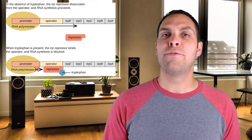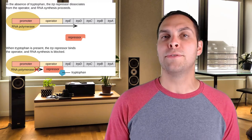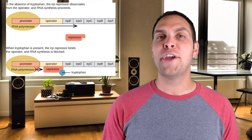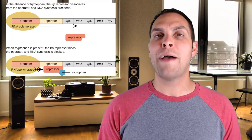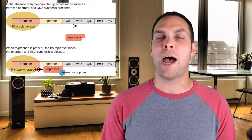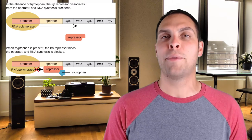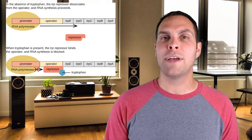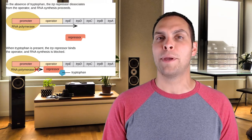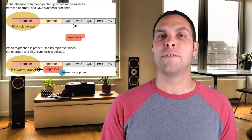If tryptophan levels rise in the cell — either because it's not being used or because the cell acquired it externally — tryptophan binds to the trp repressor and converts it into its active conformation, acting as a co-repressor. Co-repressors activate a repressor. The now-active repressor binds to the operator, physically blocking RNA polymerase from reading through and transcribing those genes. Eventually, tryptophan is used up, levels drop, the co-repressor is no longer present, the trp repressor becomes inactive, falls off the operator, and transcription begins again.